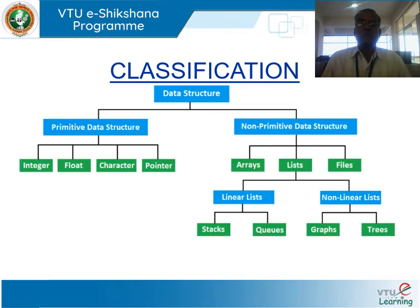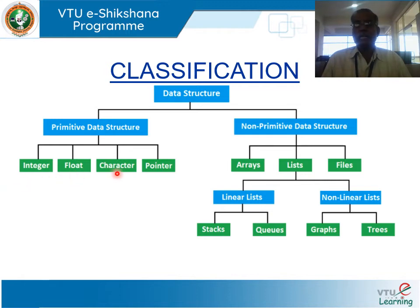Data structures are broadly classified into two categories: primitive and non-primitive. Primitive data structures are those that are non-decomposable — they include integer, float, character, and pointer. These basic data types are called primitive data structures.